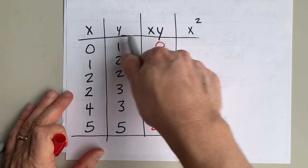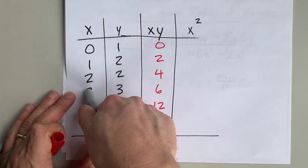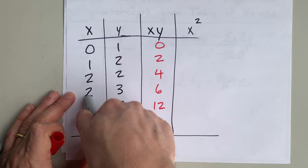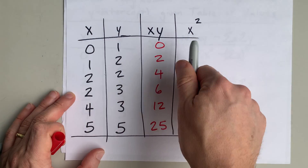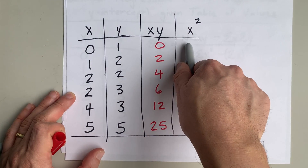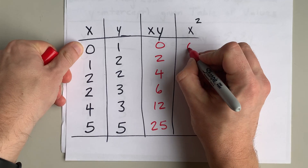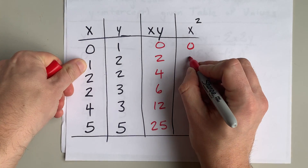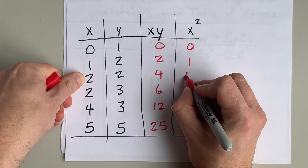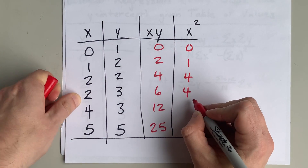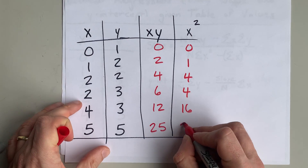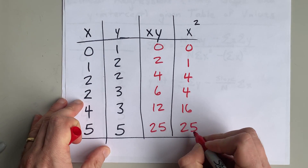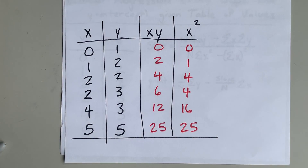In the x-squared column, take each x value and square it. If they're negative, remember they become positive here. So: 0 squared is 0, 1 squared is 1, 2 squared is 4, 2 squared is 4, 4 squared is 16, 5 squared is 25. That's all the grunt work done.